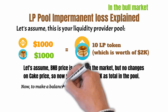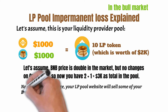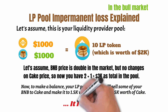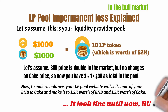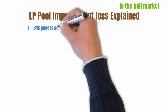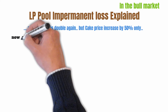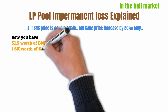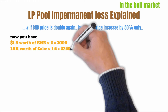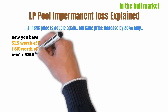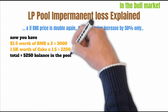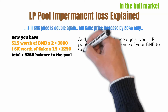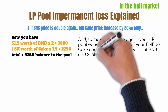Now, to make a balance, your LP pool website will sell some of your BNB for Cake and make it $1,500 worth of BNB and $1,500 worth of Cake token coin. So we are in the bull market — it looks fine until now. But if BNB price doubles again and Cake price increases by 50% only, then you will have $1,500 worth of BNB which doubled to $3,000, and $1,500 worth of Cake which increased by 50% to $2,250 — giving a total of $5,250. To make a balance again, your LP pool will sell some BNB, resulting in $2,625 worth of BNB and $2,625 worth of Cake.